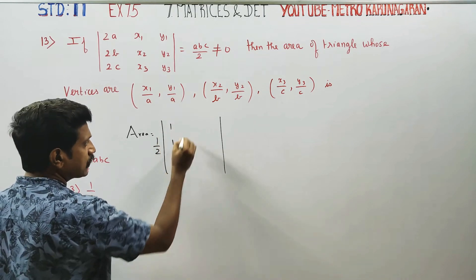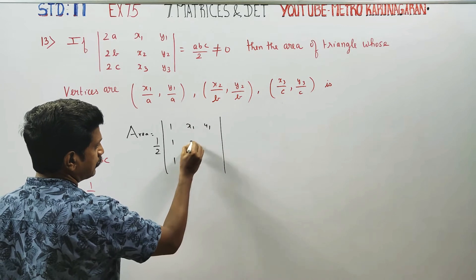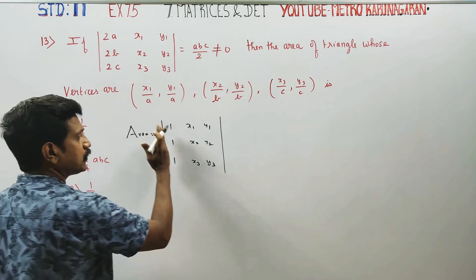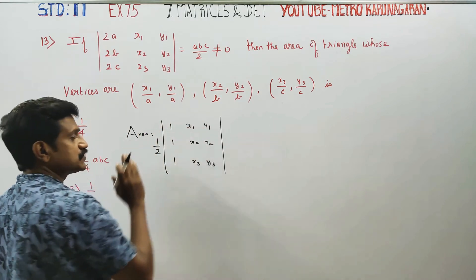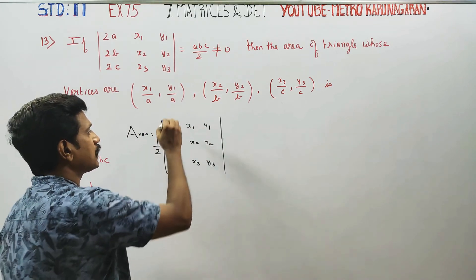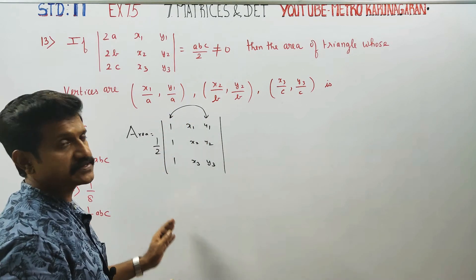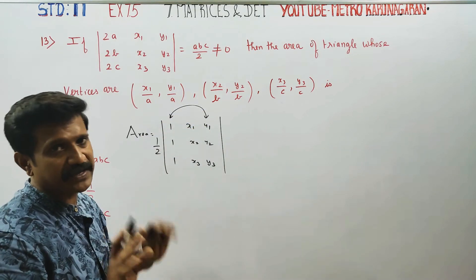The first formula writes the determinant with ones in a column: 1, 1, 1, then x1, y1, x2, y2, x3, y3. This gives the area of the triangle.